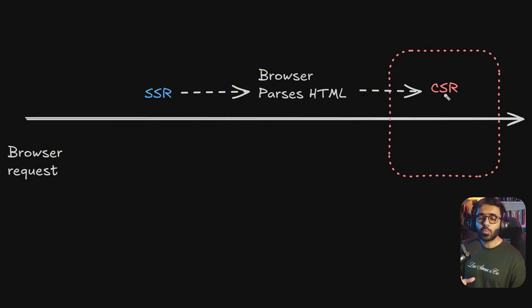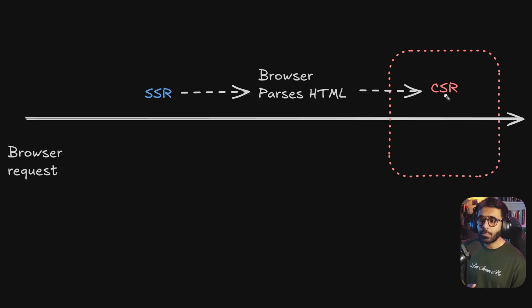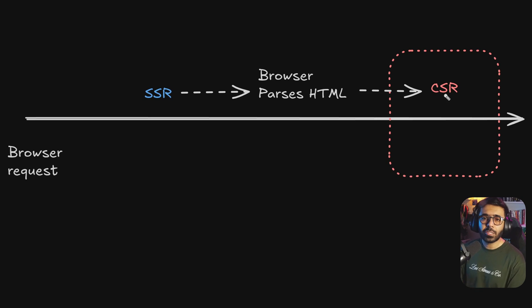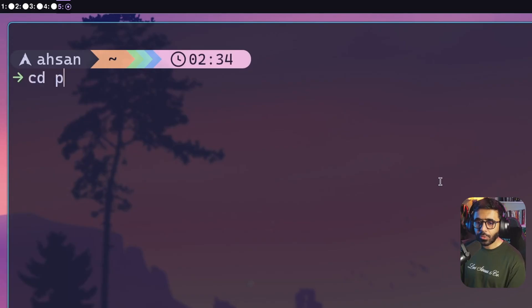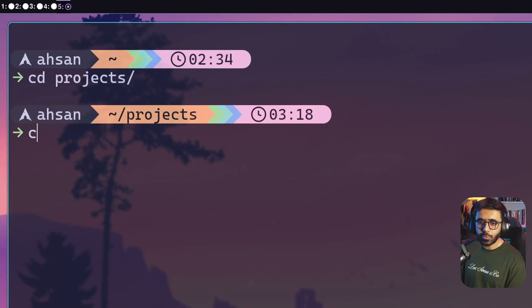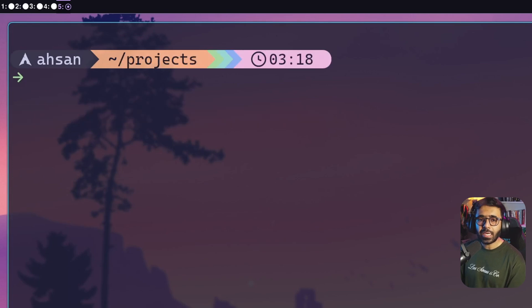Looking at the timeline: when the browser sends a request in the case of SSR, server-side rendering renders the HTML on the server itself, sends it to the browser, the browser parses the HTML, and then client-side rendering kicks in. This process differs depending on whether we are using hydration or not, and we'll get to that shortly. For now, let's create a new application and look at the differences between these rendering modes.